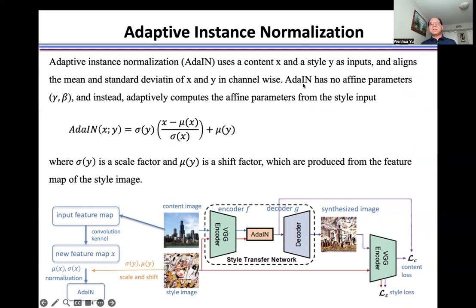AdaIN has no affine parameters (γ, β). Instead, it adaptively computes the affine parameters from the style input.